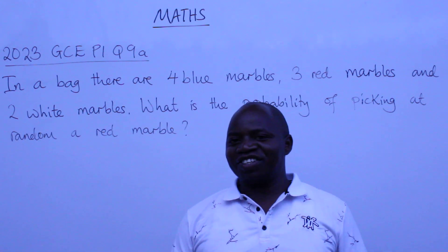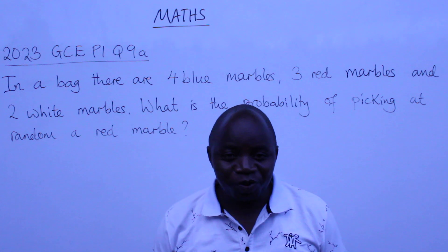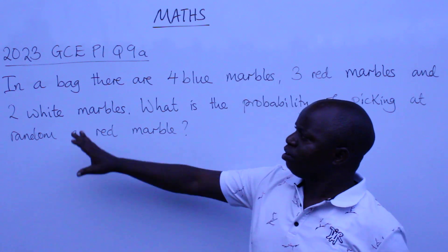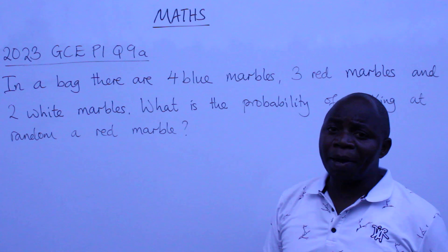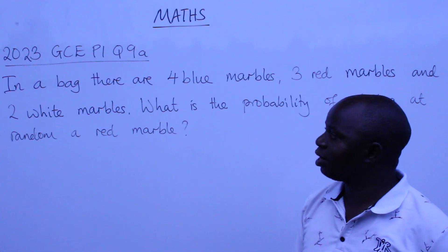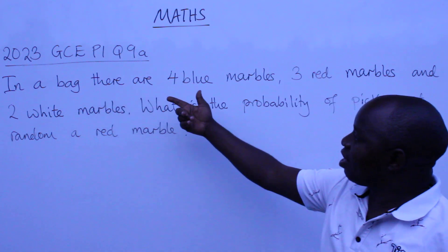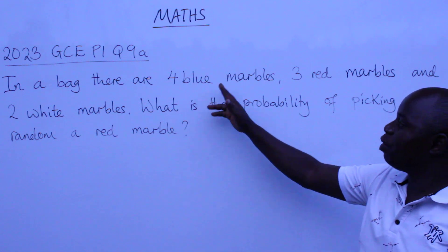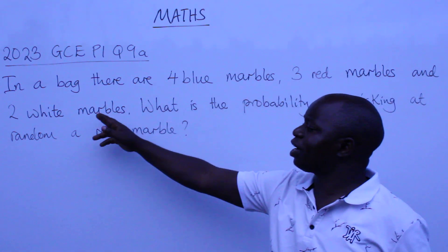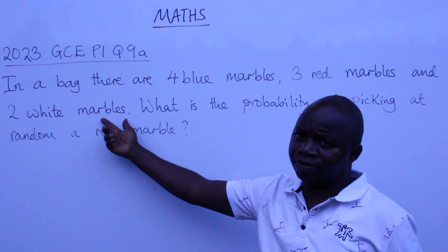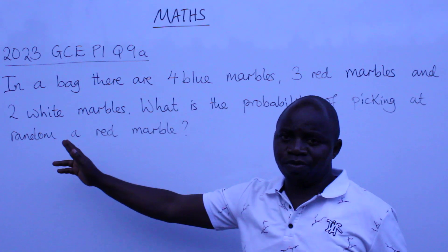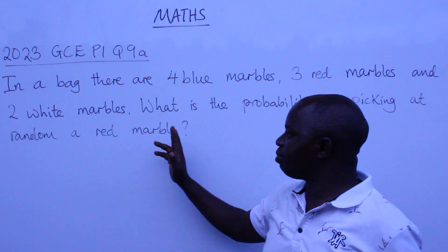Greetings ladies and gentlemen. With me is a mathematics question from the 2023 GCE Paper 1 — this was question 9a. In a bag there are four blue marbles, three red marbles and two white marbles. What is the probability of picking at random a red marble?